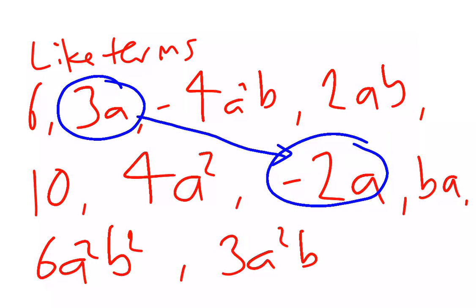Over here we've got 2ab. Doesn't matter that b and a are in different order. a times b is the same as b times a. So these two are a pair of like terms.